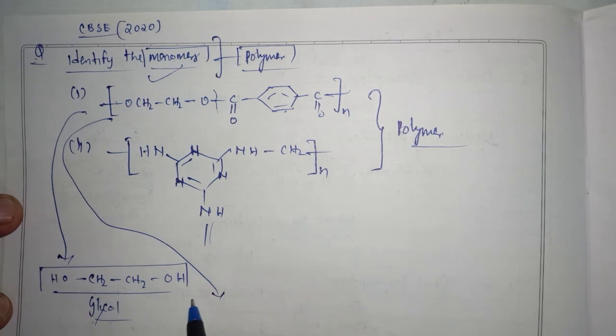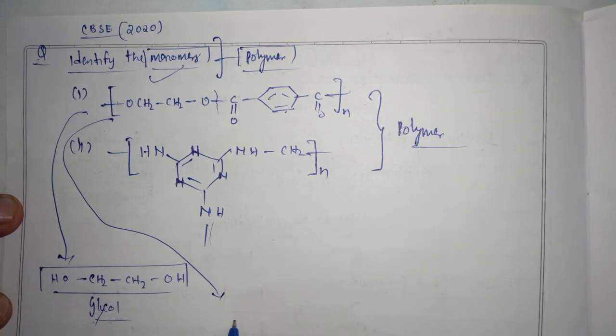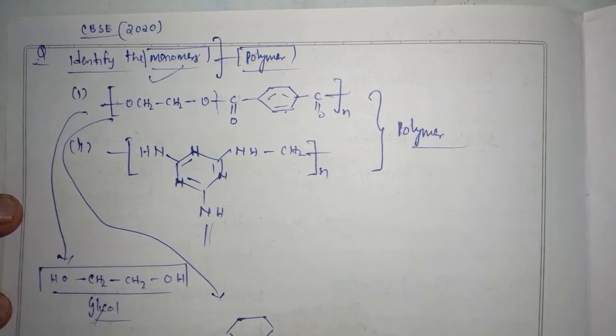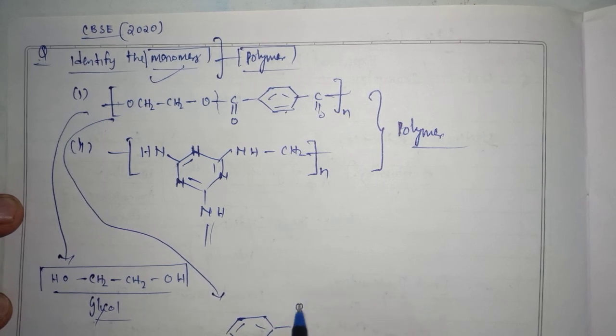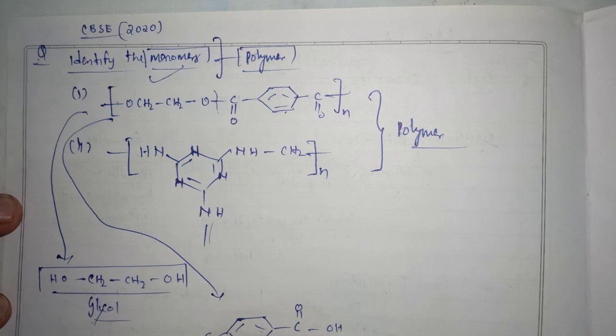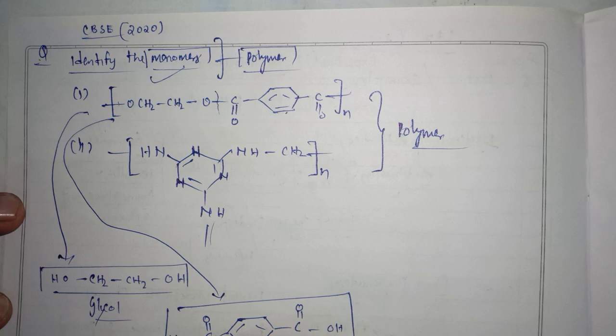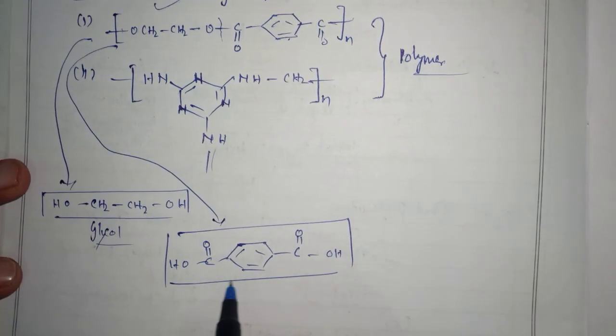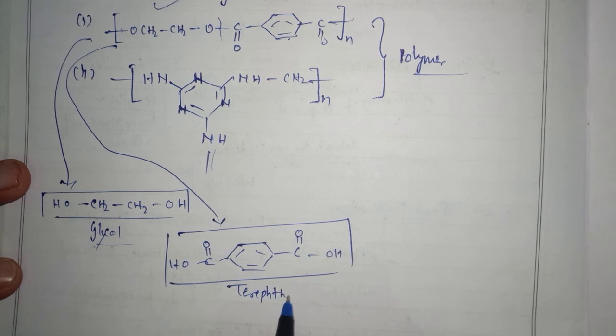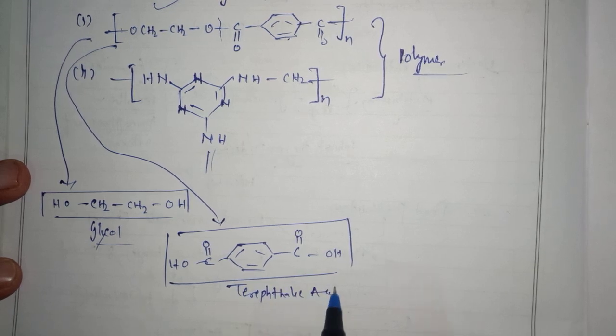And the second part which is present here in the first structure is your terephthalic acid. So a benzene ring which is present, C double bond O, OH, C double bond O, OH. So it is called terephthalic acid.